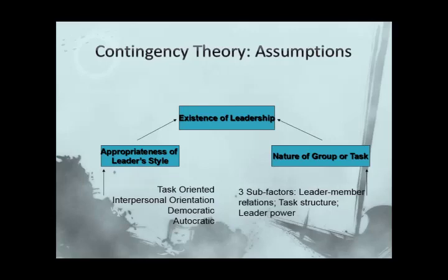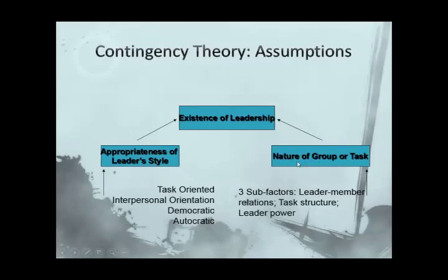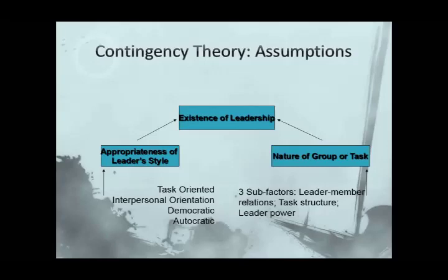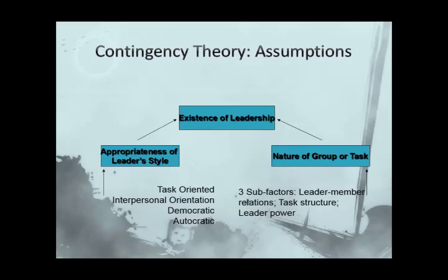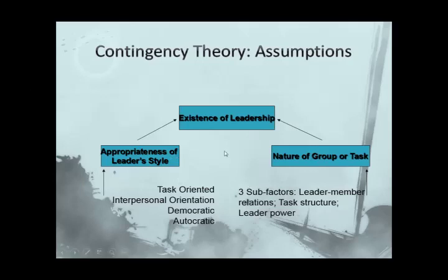All of these things are working together simultaneously. You have the three sub-factors: power, task, and leader-member relations. Those things are going to influence the nature of the environment — think about the organizational culture, the working climate. And then the appropriateness of the leader's style: you're going to emphasize or deemphasize certain points of view depending on who you're talking to. If you're in Campus Recreation and talking with another assistant or associate director, your leadership style is going to be different than if you're speaking with student staff. Everything is going to be contingent on the environment and the nature of the situation.